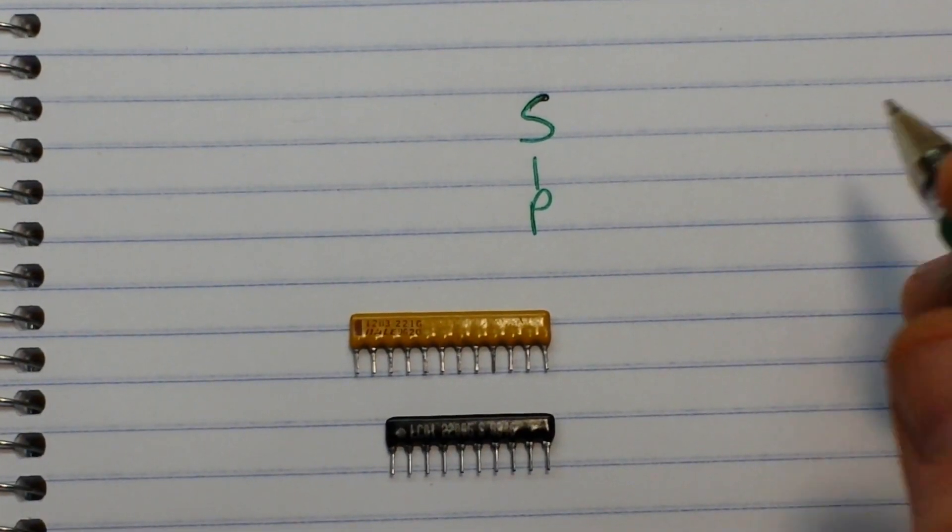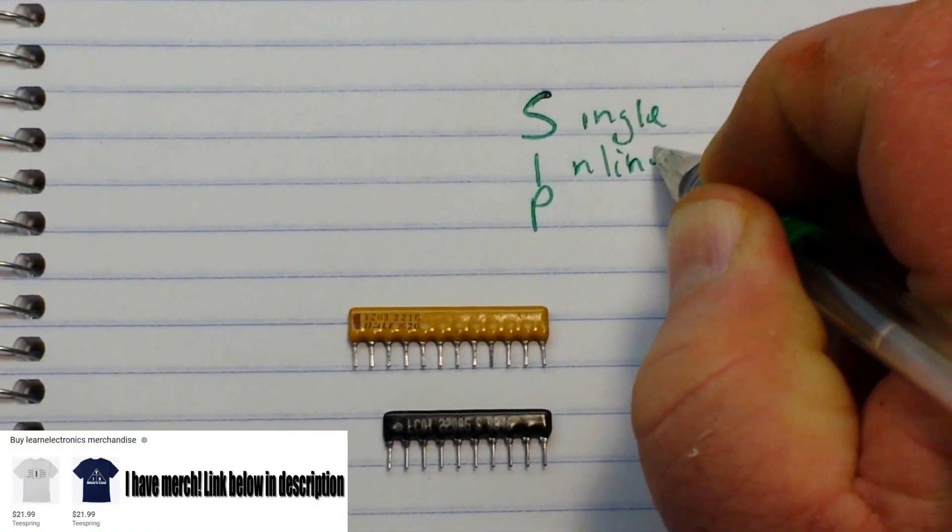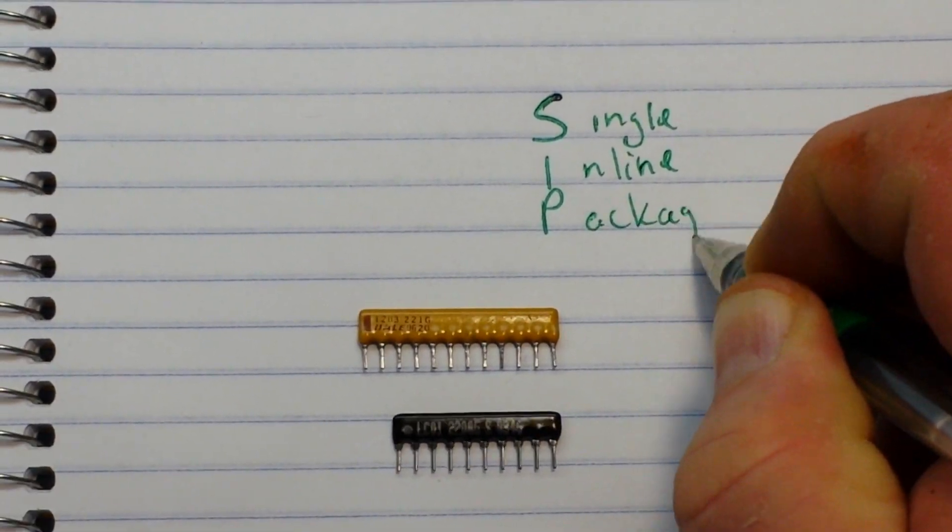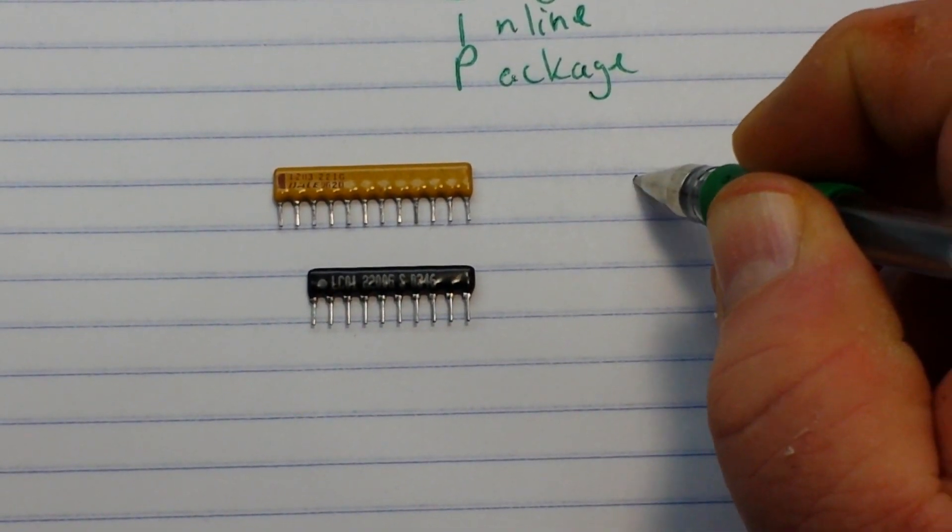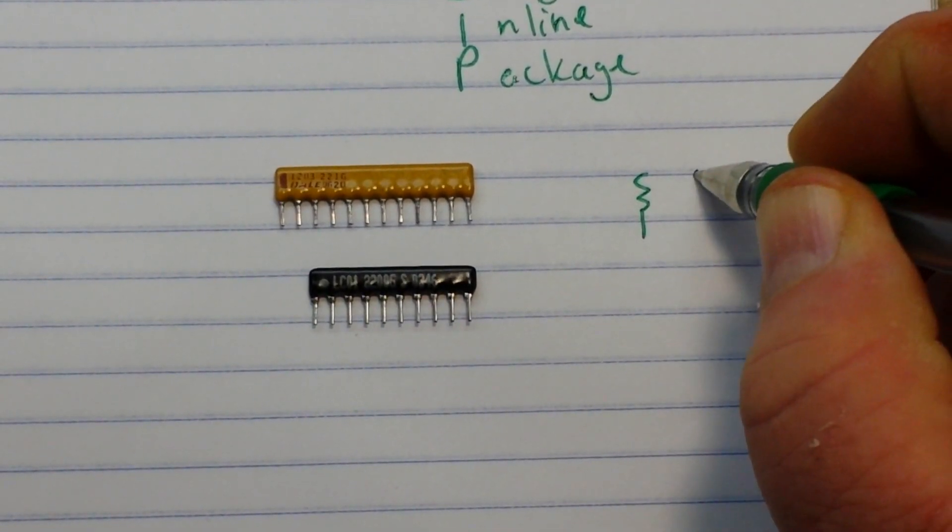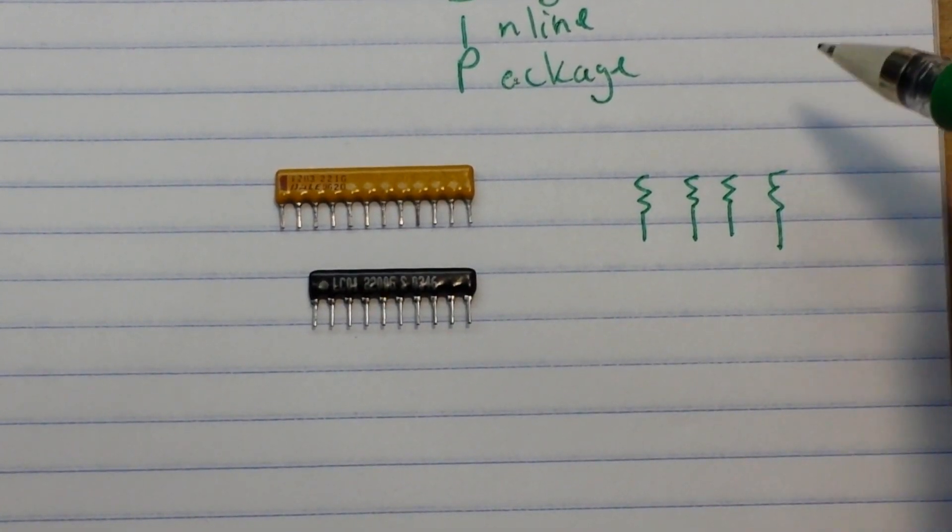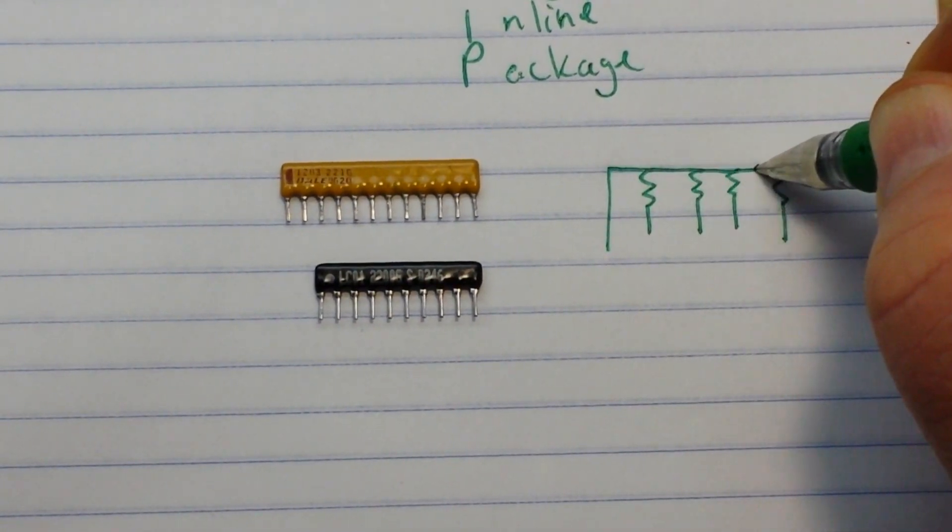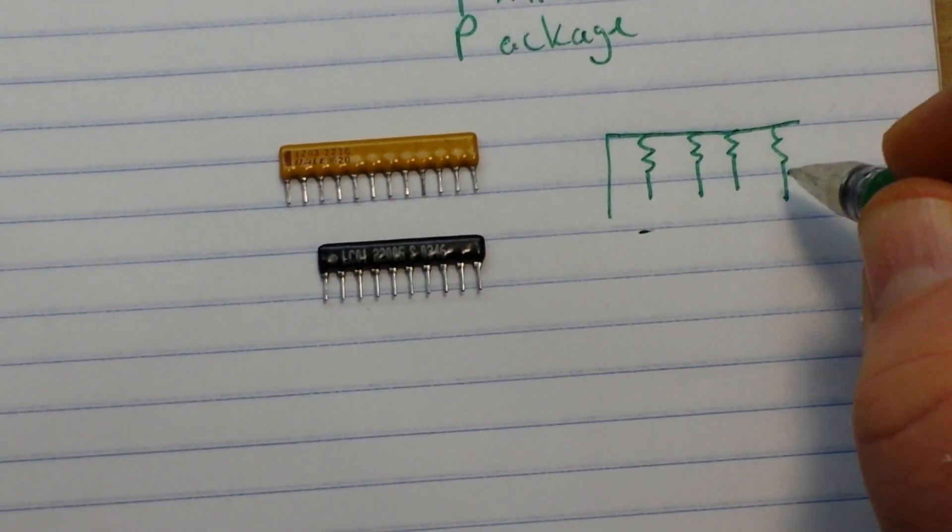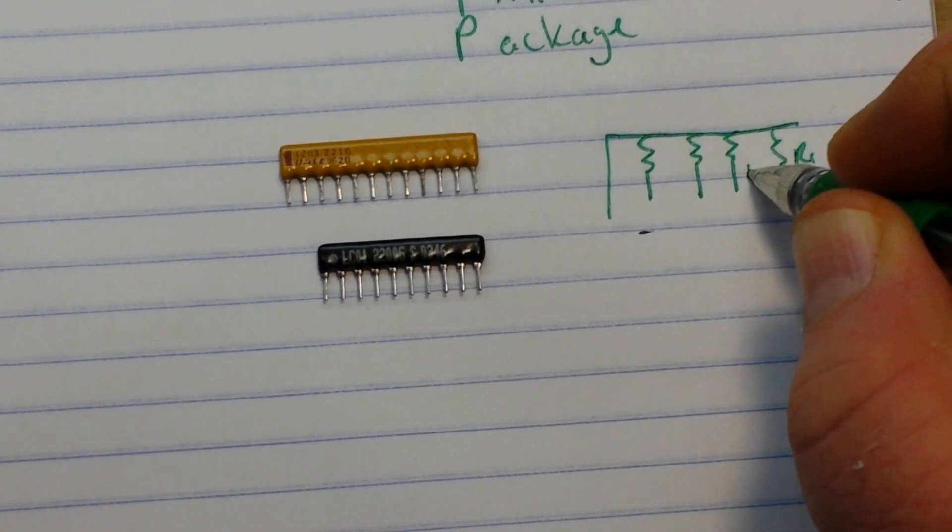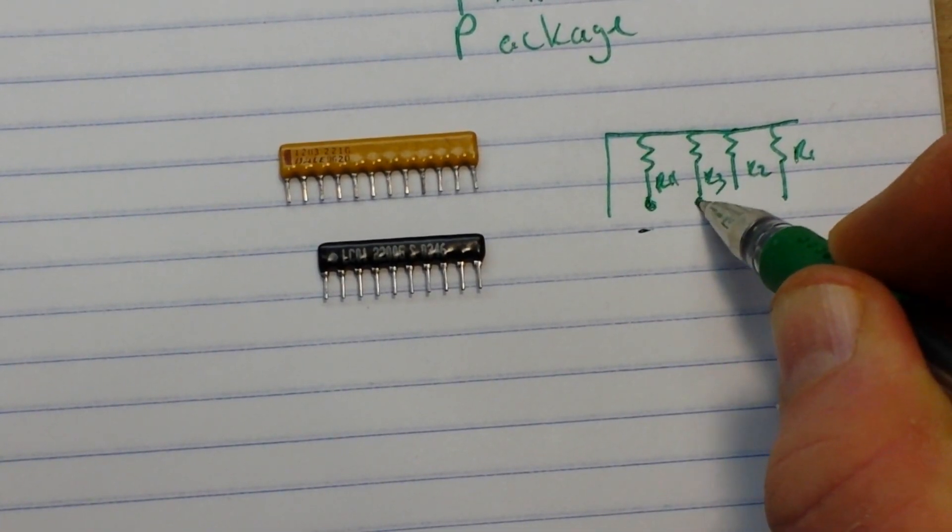SIP stands for single inline package and what we've got going on here is basically something like this. So we have in this case four resistors - R1, R2, R3, and R4 - and they each have an individual contact here.